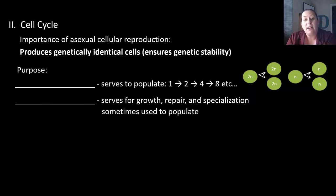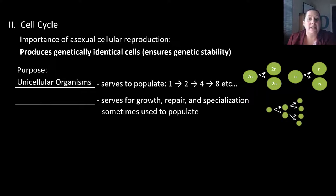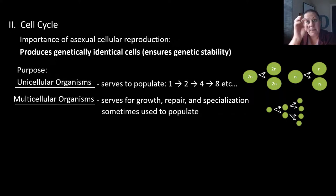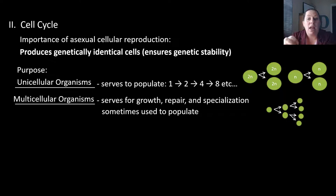For unicellular organisms, the whole point is so they can populate an area: one cell goes to two, two go to four, four go to eight, eight go to sixteen, and so on. However, in multicellular organisms, this serves as growth and repair, as well as specialization. When a group of cells comes together and gets a job, they become your heart; another group becomes your liver — they're specialized and given a job.